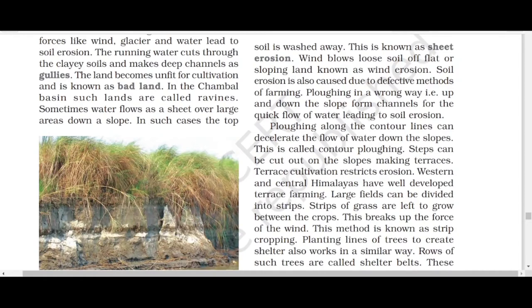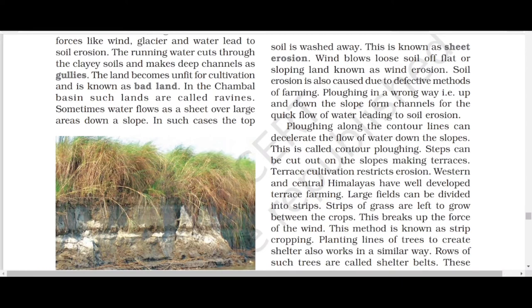Land that has undergone gully erosion becomes unfit for cultivation and is known as bad land. In the Chambal Basin, such bad lands are called ravines. So remember: gully erosion creates bad land, and in the Chambal Basin these are specifically known as ravines.